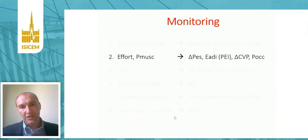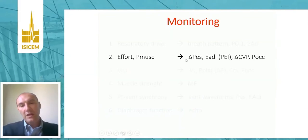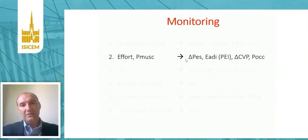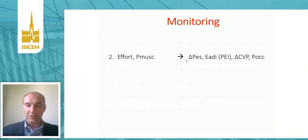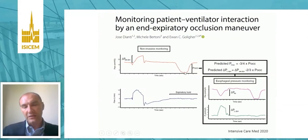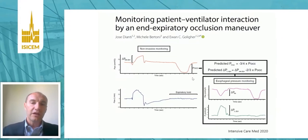We also want to monitor the effort of the patient — the muscular pressure developed by the respiratory muscles. The gold standard is inspiratory swings in esophageal pressure, but esophageal pressure monitoring is not performed everywhere and is not common at the bedside. We can estimate muscular pressure from the electrical activity of the diaphragm, from the occlusion pressure, and from swings in central venous pressure. The occlusion pressure is a simple bedside maneuver: the negative deflection of airway pressure during an inspiratory effort against the occluded airway. From the amount of pressure developed during the expiratory occlusion, we can predict muscular pressure and dynamic transpulmonary pressure.